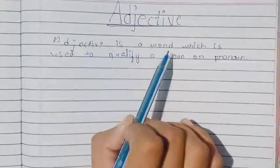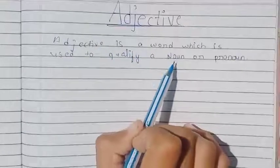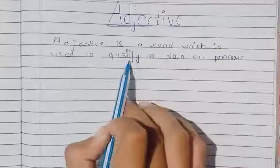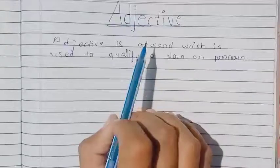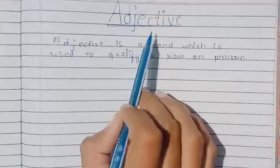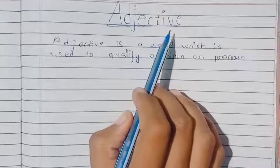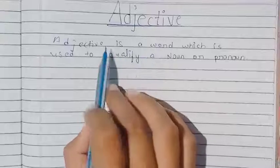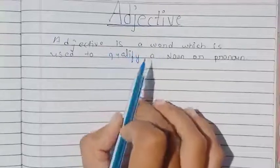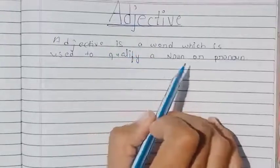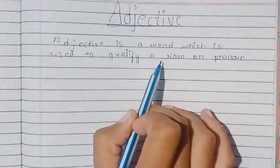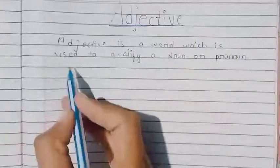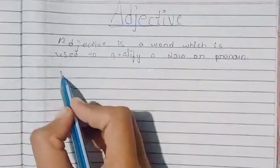Adjective वह शब्द है जो noun और pronoun की विशेशता बताता है। Adjective को हम हिंदी में विशेशण बोलते हैं। तो, adjective वह शब्द है जो noun और pronoun की विशेशता बताता है। For example,